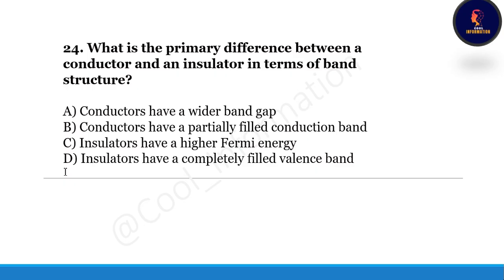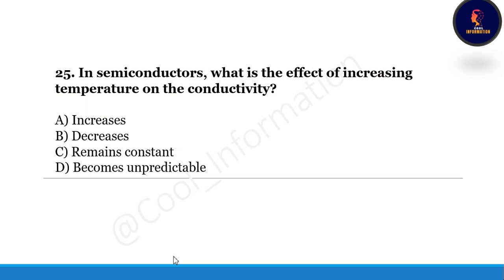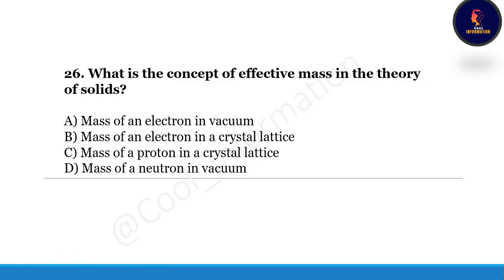Next question: what is the primary difference between a conductor and an insulator in terms of band structure — conductors have a higher wider band gap, conductors have a partially filled conduction band, insulators have a higher Fermi energy, or insulators have a completely filled valence band? Correct option is B, conductors have a partially filled conduction band. Next question: in semiconductors, what is the effect of increasing temperature on conductivity — it increases, decreases, remains constant, or becomes unpredictable? Correct option is A, it increases. Next question: what is the concept of effective mass in the theory of solids? Correct option is B, the mass of an electron in a crystal lattice.